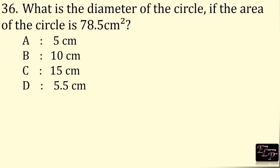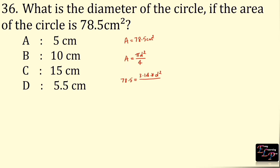What is the diameter of the circle if the area of the circle is 78.5 cm²? Area is 78.5 cm². Area of a circle is πd² ÷ 4: 78.5 = 3.14 × d² ÷ 4, so d² = 78.5 × 4 ÷ 3.14 = 100. Therefore d = √100 = 10 cm.